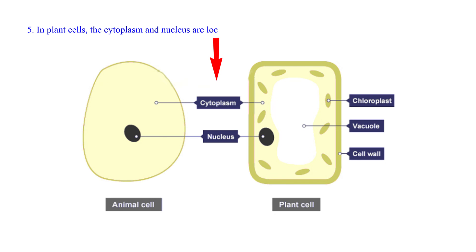5. In plant cells, the cytoplasm and nucleus are located towards the end or periphery of the cell, but in animal cells the cytoplasm occupies most space in the cell while the nucleus is located at the center.